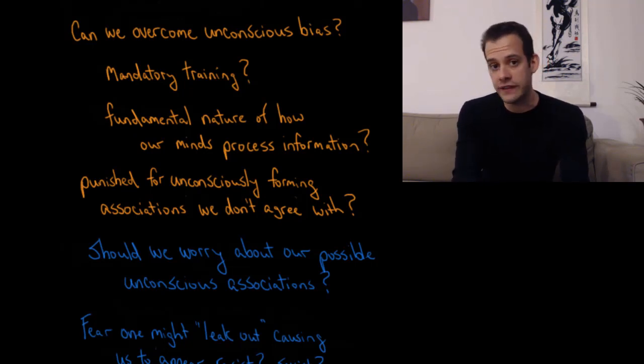Can we really expect that all the associations we form with our limited information of the world will be fair and balanced associations? And if we don't act on them, does it matter if they're not perfectly fair? Should people be punished for unconsciously forming associations that we don't agree with? So how much should we worry about this implicit association test? And how much should we worry about our own possible unconscious associations?